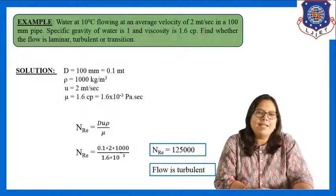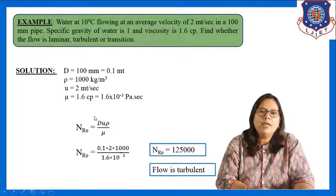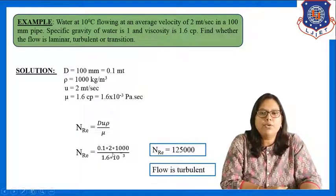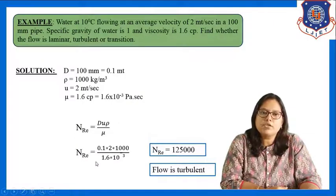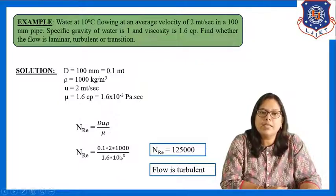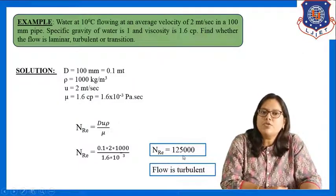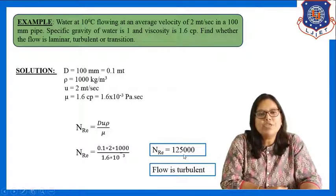We know that NRE = du·rho / mu. We have all the data, so substituting: NRE = (0.1 × 2 × 1000) / (1.6×10⁻³). Solving this gives NRE = 125,000. As this value is greater than 4000, the flow is turbulent.